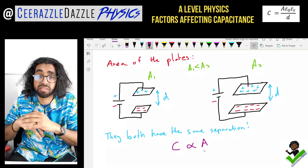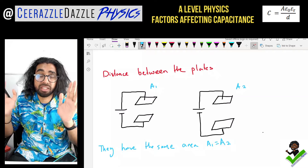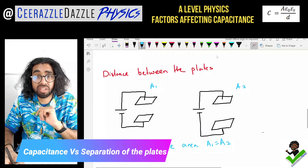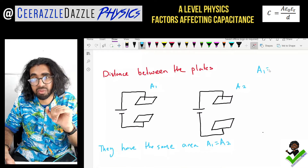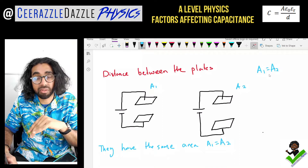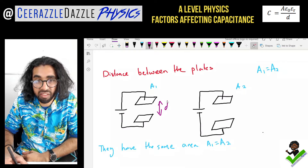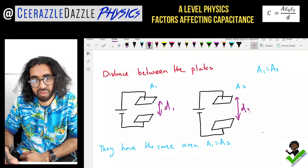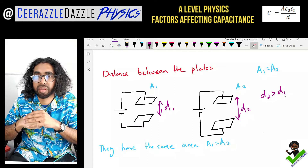What about another factor? Let's look at the distance between the plates. I've drawn two diagrams where the areas are the same — area one equals area two — but what I'm changing is the separation between the plates. This is d1 on the left and d2 on the right, and we can clearly see from the diagram that d2 is greater than d1.